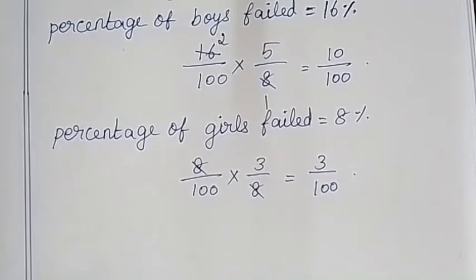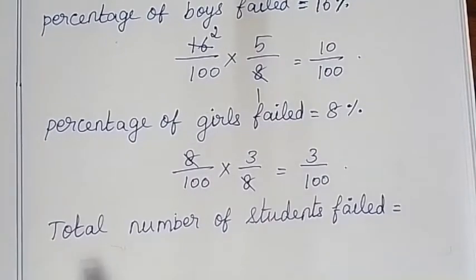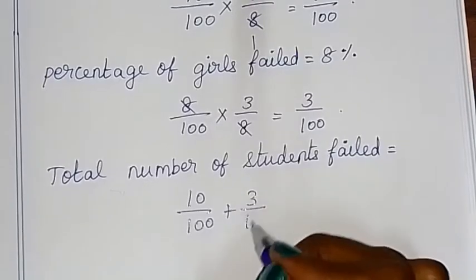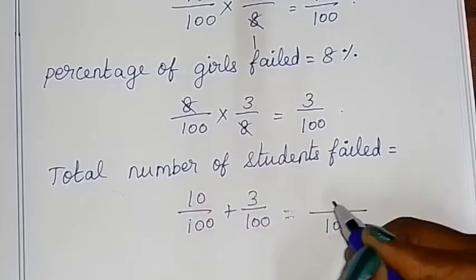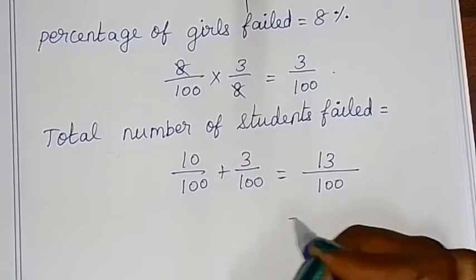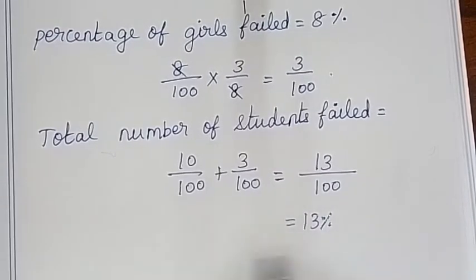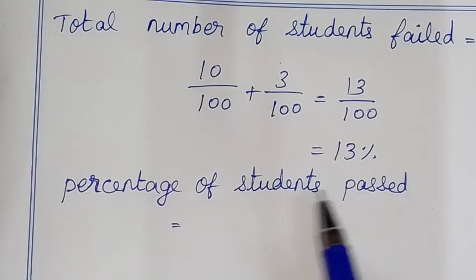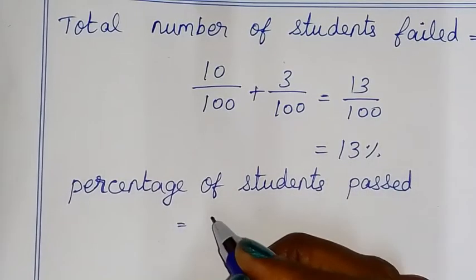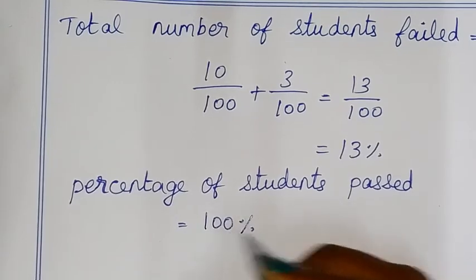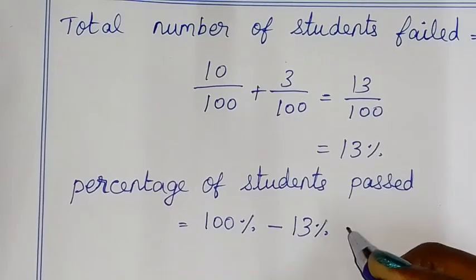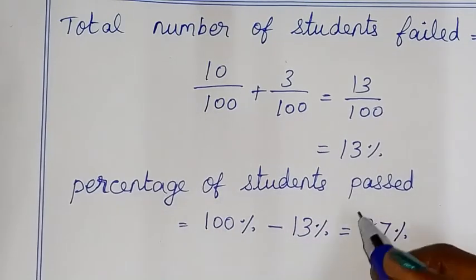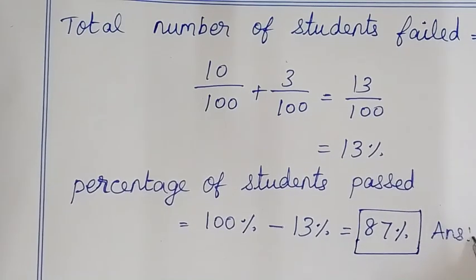Add the totals: total number of students failed is found by adding both values. Then, total number of students passed is calculated, and that is the required answer. Thanks for watching, children!